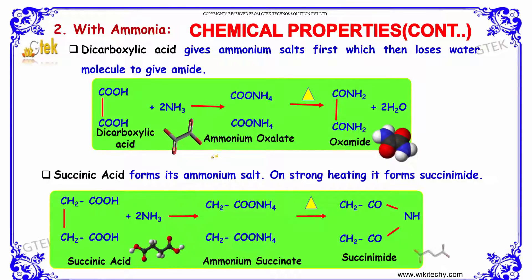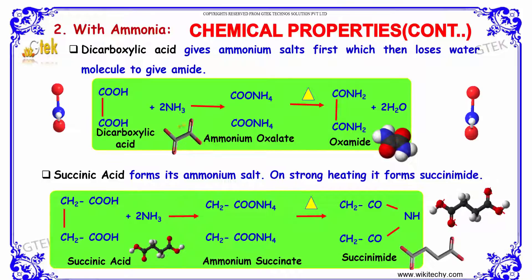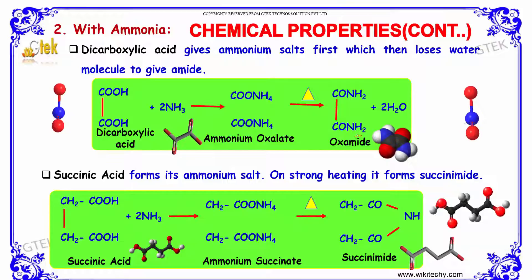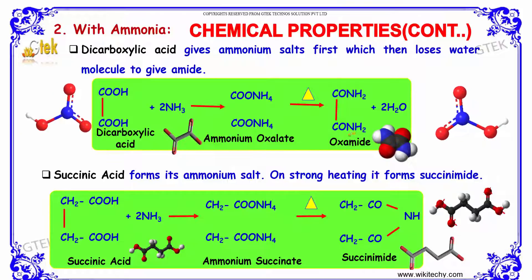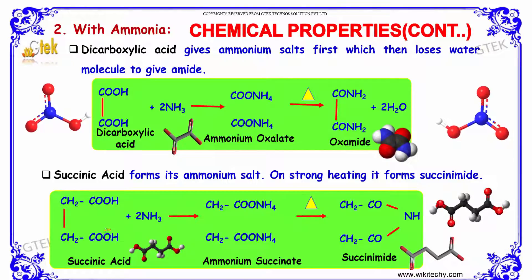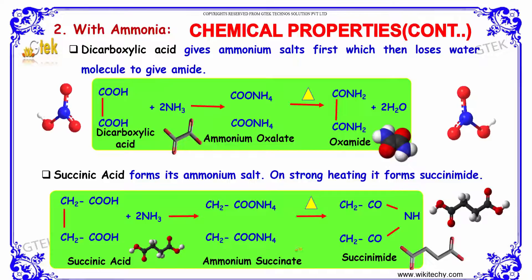Dicarboxylic acid when reacted with two moles of ammonia gives ammonium oxalate, and further on decomposition produces oxamide and two moles of water. Whereas succinic acid forms its ammonium salt, and on strong heating it forms succinamide, as shown here.